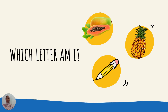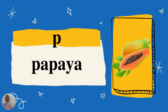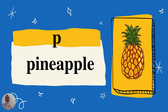Which letter am I? We have papaya, we have pineapple and we have pencil. So it is P. P capital letter and P for small letter. Okay, P for papaya. P for pineapple.